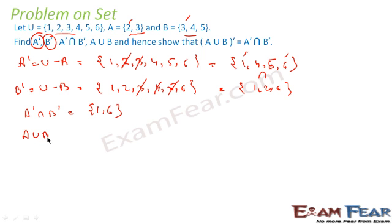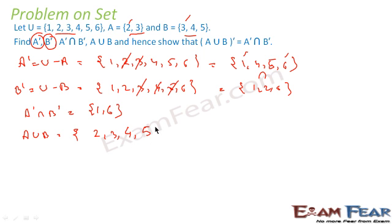Now find A union B. Write all elements of A first: {2, 3}. Then add elements of B not already listed: 3 is already there, ignore; 4 is not there — add; 5 is not there — add. So A union B is {2, 3, 4, 5}.